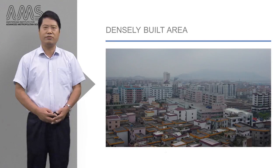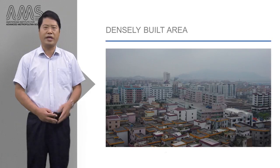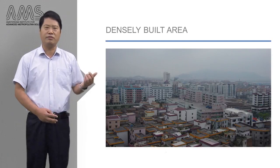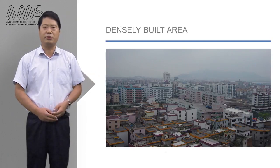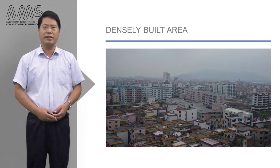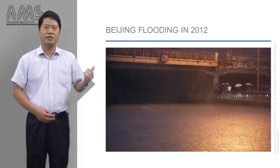This is a photo I took in 2003 in Foshan, a typical industry city in South China. We can see crowded buildings with nearly no permeable and green space surfaces. Many cities are constructed in a similar way.